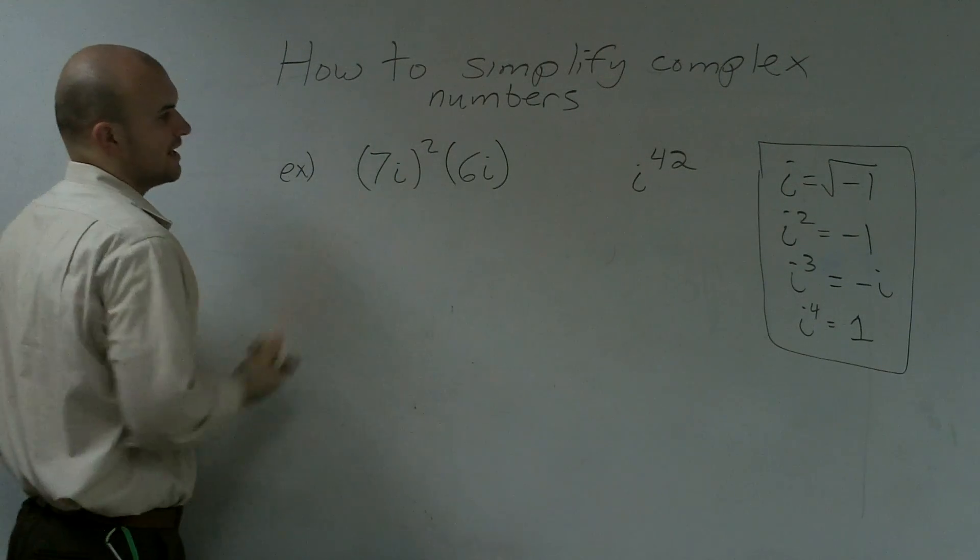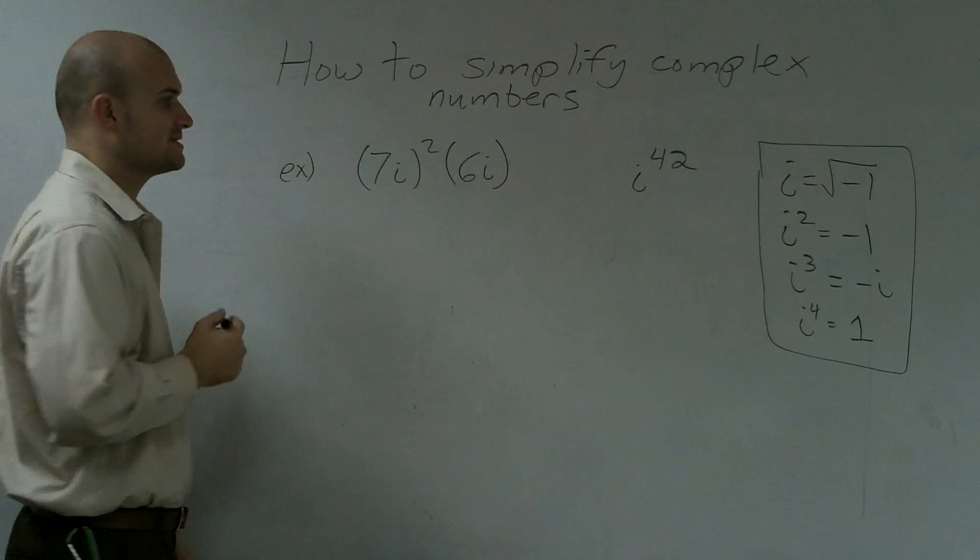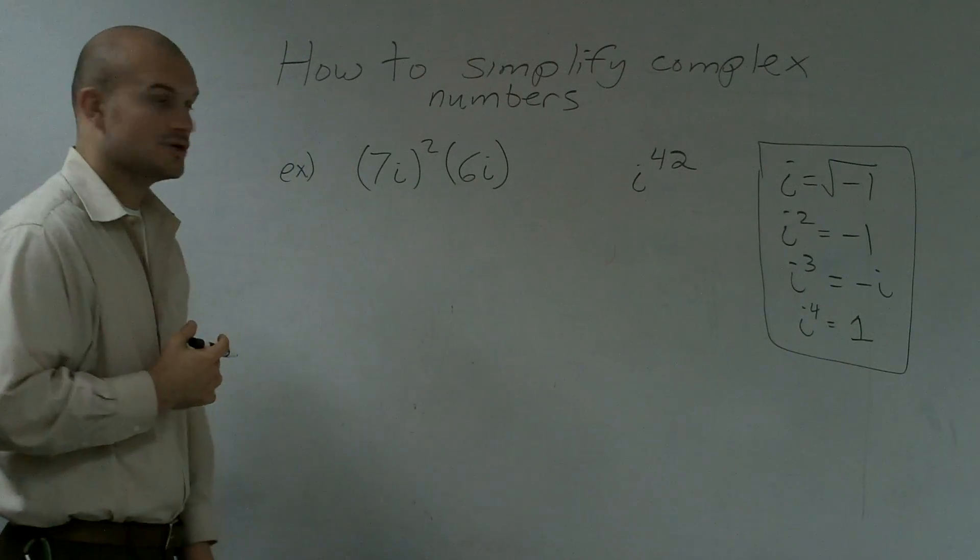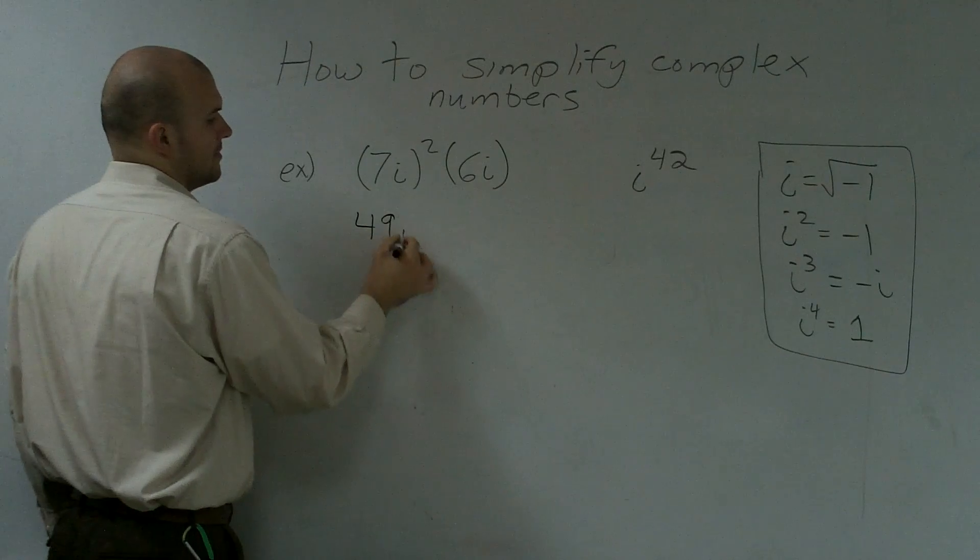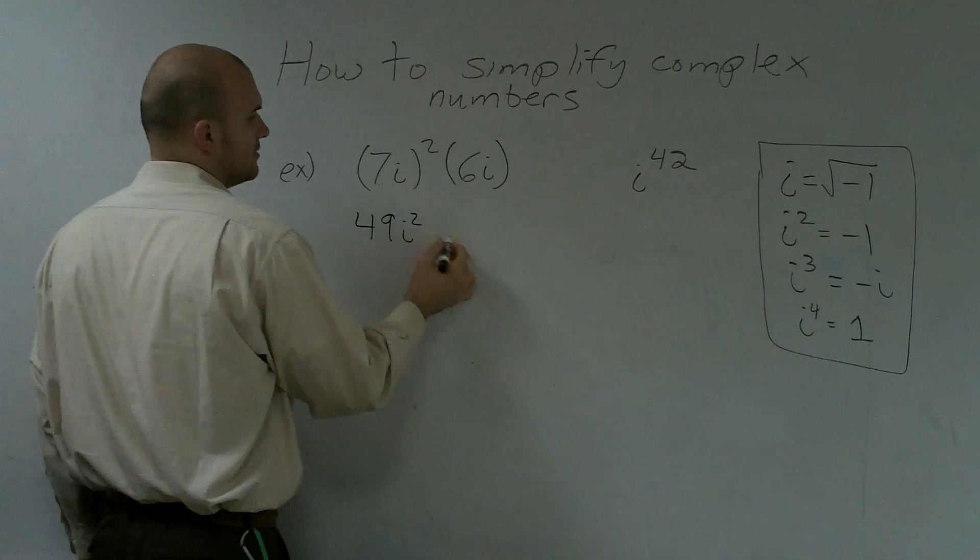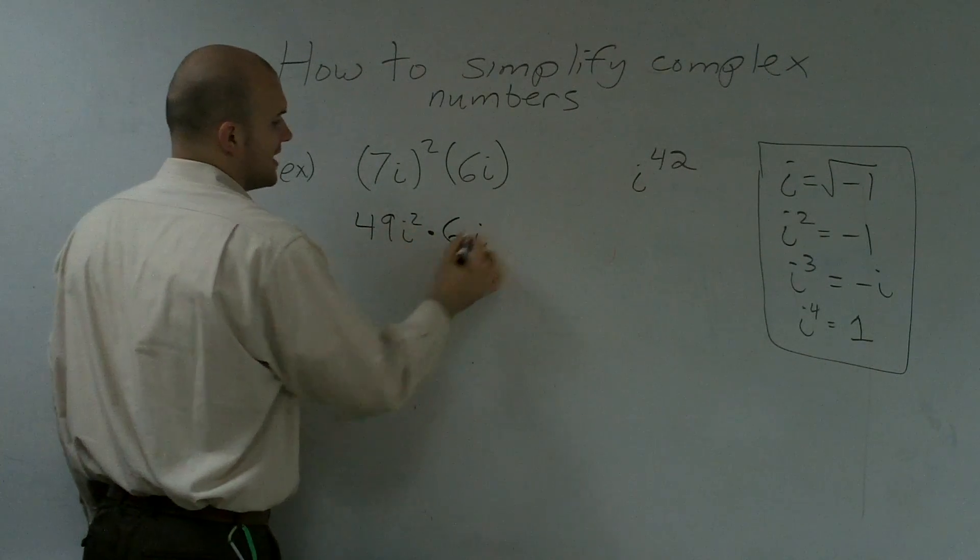So first thing I look at here, and it says 7i squared times 6i. So the first thing I need to do is square this. So this will become 49i squared times 6i.